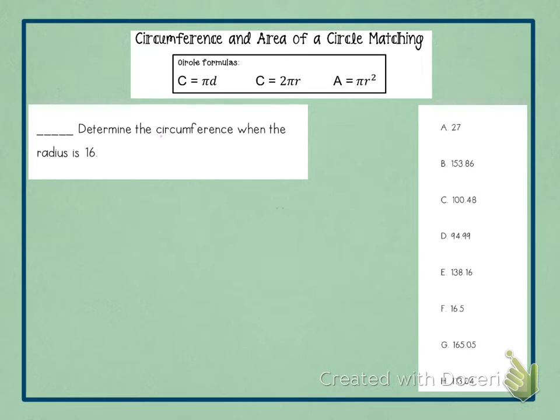And then here is number one. It says determine the circumference when the radius is 16. So it tells you to find circumference, and then it tells you that radius is 16. So when it gives you radius, this is the formula we are going to use for circumference. So first up we always do is write down your formula.